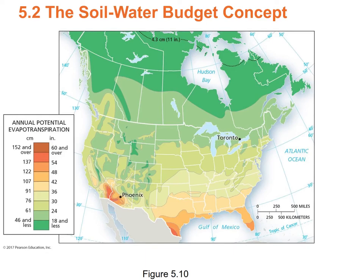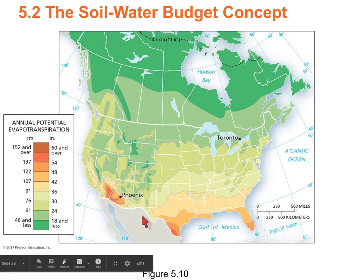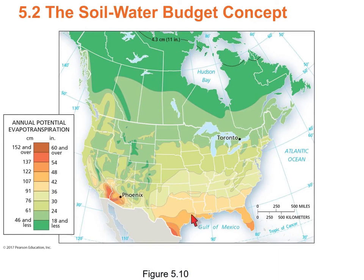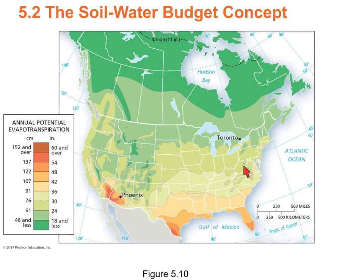This map shows POTET, which is really just a proxy for temperature — the higher the temperature, the higher the POTET. The warmest places like Palm Springs, Arizona, Texas, and Florida have the highest POTET values. Across the plains, it's just a function of latitude. You can see where this is disturbed across the Rockies and the Sierras — higher elevation means lower energy available to evaporate water, so lower POTET values. The Appalachians have lower POTET because they're cooler and higher.